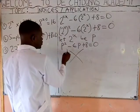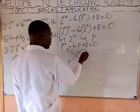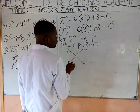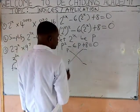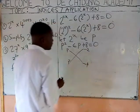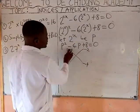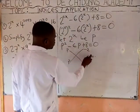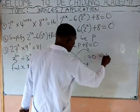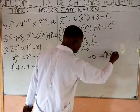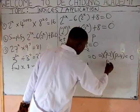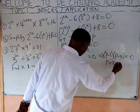First, factorize it. We have P, P — because you have minus plus, the factors should be minus, minus. So minus 2 and minus 4: minus 2 plus minus 4 is minus 6, and minus 2 times minus 4 is plus 8 equals 0. It implies that P minus 2, bracket P minus 4, equals 0. So P equals 2 or P equals 4.